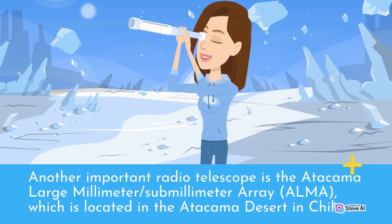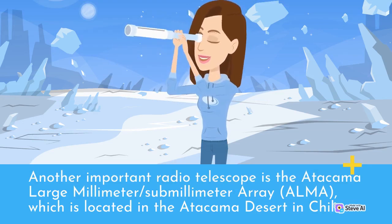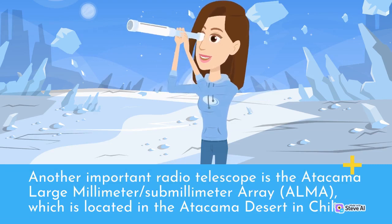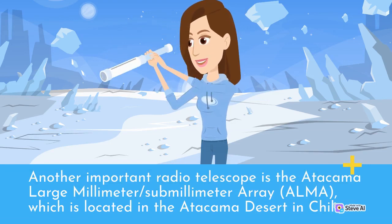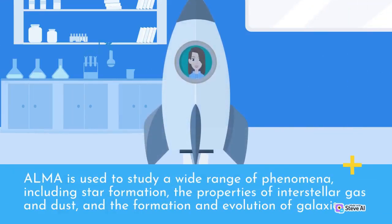Another important radio telescope is the Atacama Large Millimeter-Submillimeter Array, ALMA, which is located in the Atacama Desert in Chile. ALMA is a collection of 66 radio telescopes that are designed to observe radio waves at millimeter and submillimeter wavelengths. ALMA is used to study a wide range of phenomena, including star formation, the properties of interstellar gas and dust, and the formation and evolution of galaxies.